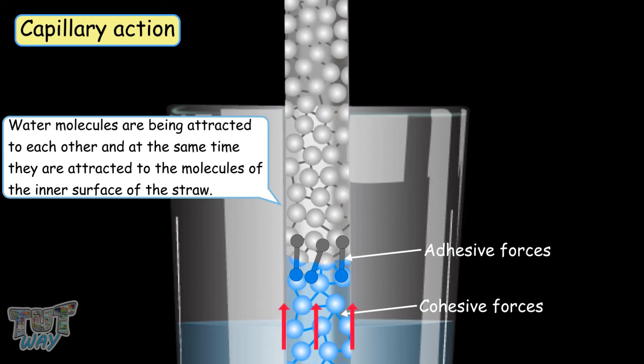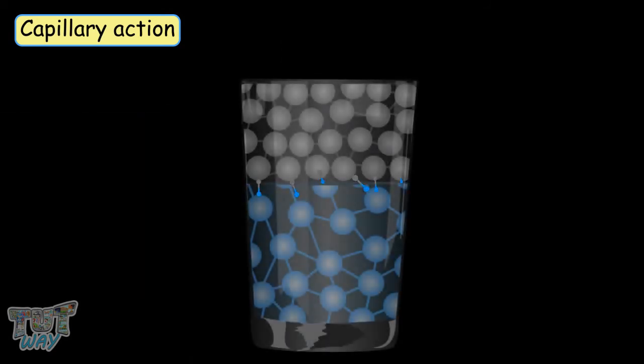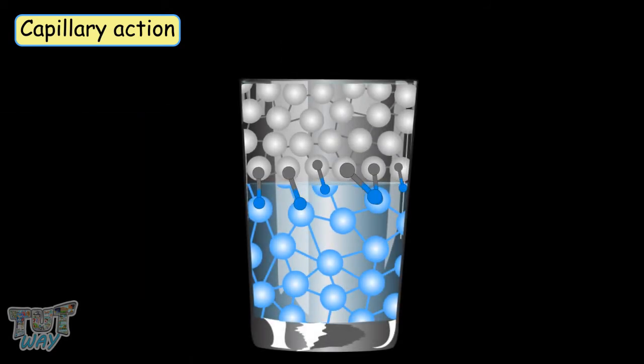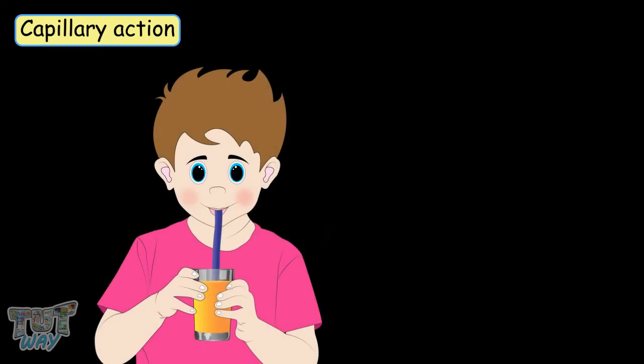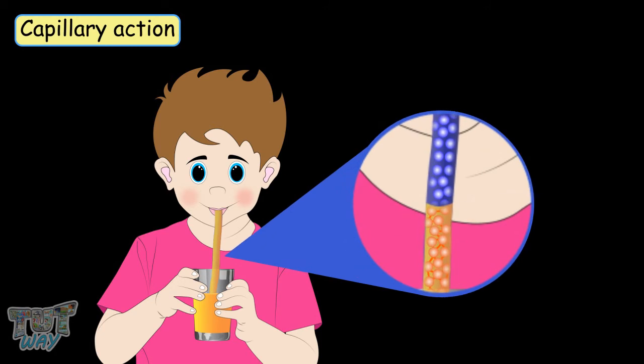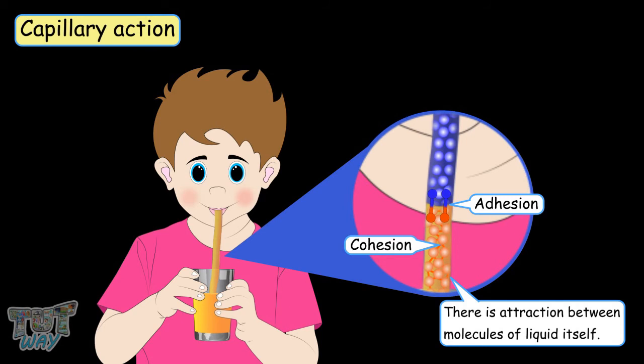Now let's try to understand capillary action even more. Liquids are actually sticky as in they stick to themselves as well as other substances. Liquids attracted to each other is known as cohesion and liquids attracted to other substances is known as adhesion. Let's take an example of drinking a liquid with a straw. The liquid molecules inside the straw experience attraction towards the molecules of the straw and there is also attraction between the molecules of the liquid itself.